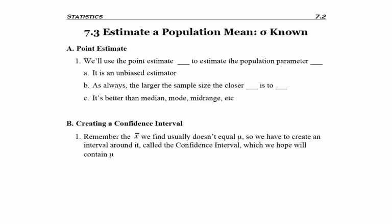Also realize that this is section 7.2. I don't know why that says 7.3. Anyways, so remember we have to start with a point estimate, and we want to estimate a population mean. We're going to use the point estimate of X bar to estimate our population parameter, and the parameter for a mean is mu.